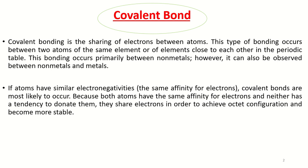Covalent bonding is actually the bond which is formed by the sharing of electrons between atoms. The ionic bond was about the complete transfer of an electron from one atom to another atom. Covalent bond is actually the mutual sharing of electrons between two atoms. This type of bonding occurs between two atoms of the same element or of elements close to each other in the periodic table. This bonding occurs primarily between non-metals, however it can also be observed between non-metals and metals.